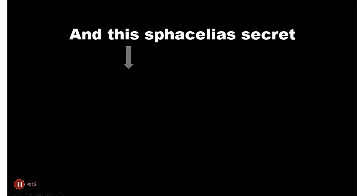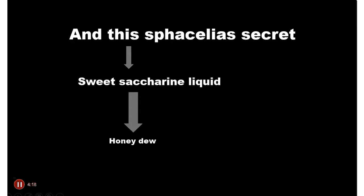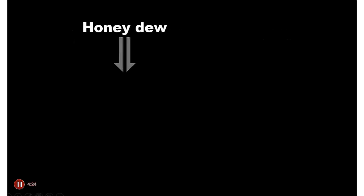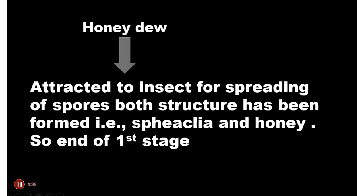The facelia secretes a sweet saccharine liquid called honeydew. Honeydew attracts insects, which help in the spreading of spores. Both structures — facelia and honeydew — are formed in this stage, marking the end of the first stage.